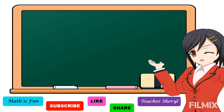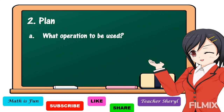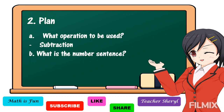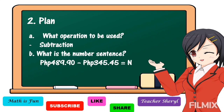The next step is we're going to plan. Under planning, we should know what operation to use. In our problem, we're going to use subtraction. The number sentence is: 489 pesos and 90 centavos minus 345 pesos and 45 centavos is equal to N.